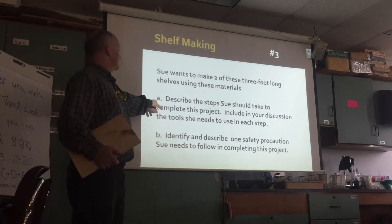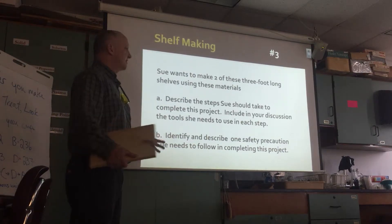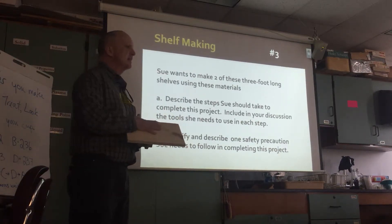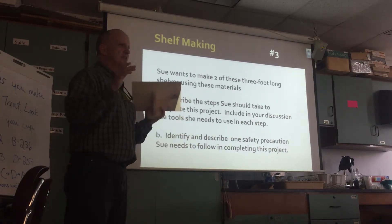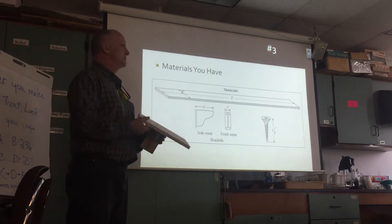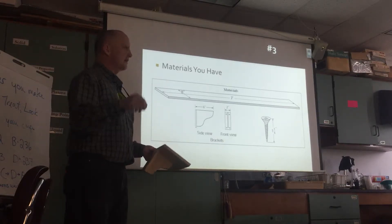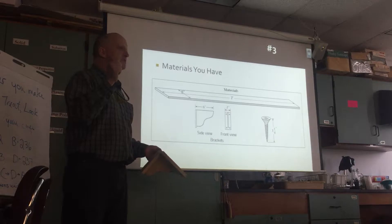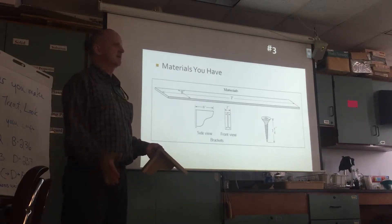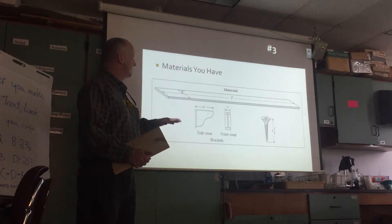For the steps to complete the project, list the steps and answer every one with a sentence that begins with 'using.' Using a tape measure, Sue is going to measure off three feet. Using a pencil and a square, she's going to make a straight line. Using a saw, she's going to cut that straight line. You can't get it wrong if you start with 'using,' because you've named the tool.